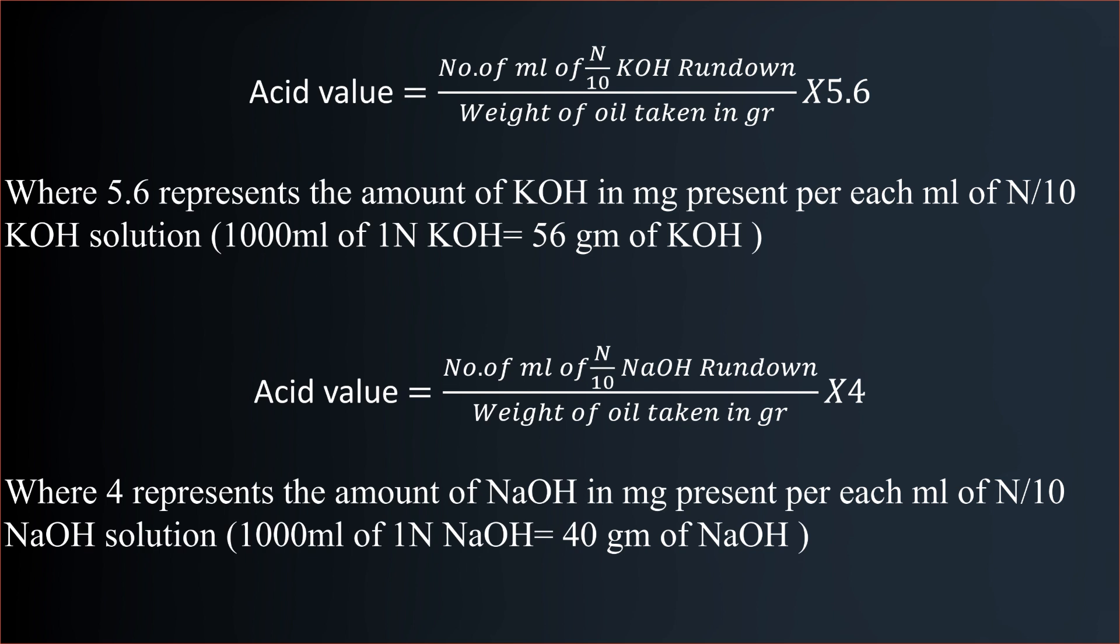Acid value equals number of moles of N/10 NaOH run down divided by weight of oil taken in grams, multiplied by 4. Where 4 represents the amount of NaOH in mg present per each ml of N/10 NaOH solution. 1000 ml of 1N NaOH equals 40 grams of NaOH.